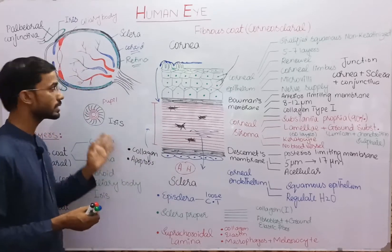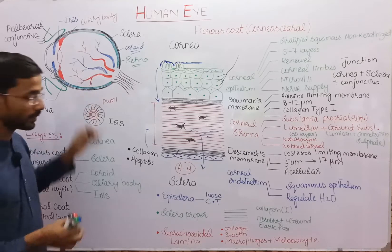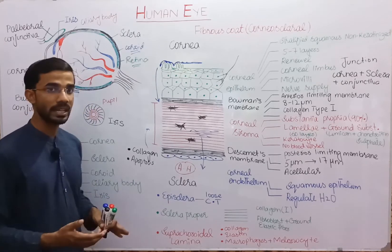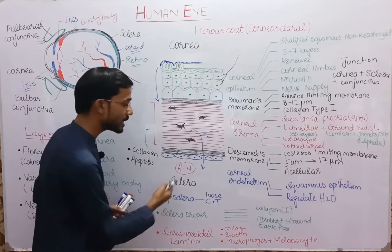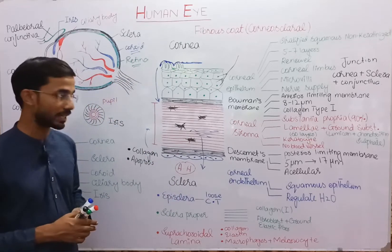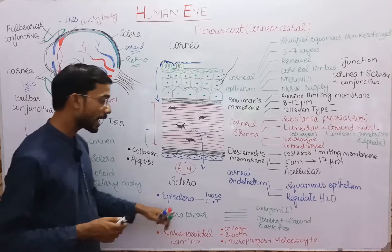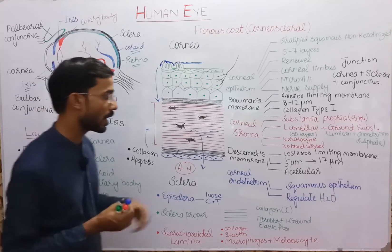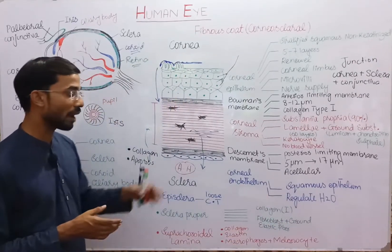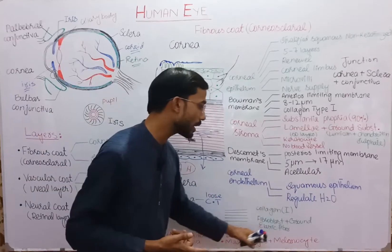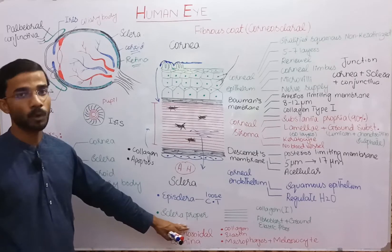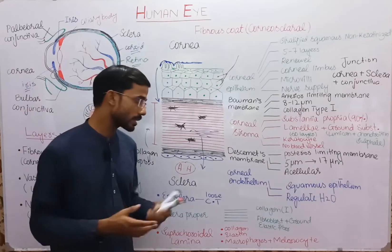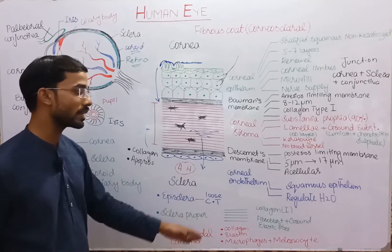The sclera is behind the eye and has three layers: episclera, sclera proper, and suprachoroidal lamina. The episclera is a loose sheet of connective tissue. Sclera proper contains different types of collagen fibers mainly type 1, fibroblasts, ground substance, and elastic fibers. The suprachoroidal lamina contains collagen type 1, elastin, macrophages, and melanocytes.